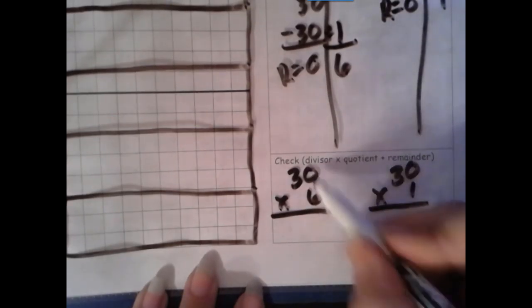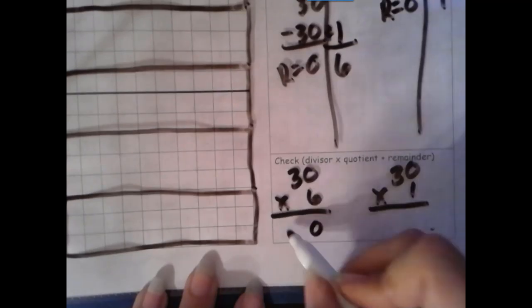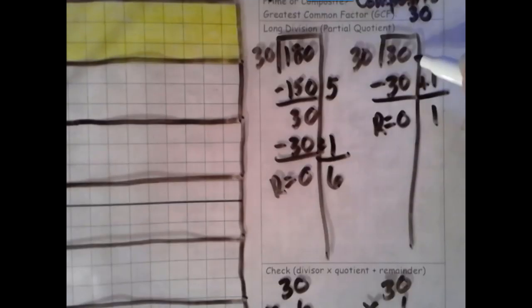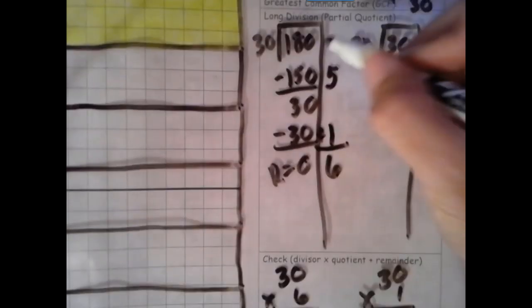So here, 6 times 0 is 0, 6 times 3 is 18. Here, we end up with the identity property of multiplication. 1 times 0 is 0, 1 times 3 is 3. When you multiply by 1, it stays the same. Let's check. Does it match our dividend? 30 matches 30. 180 matches 180. So both of those check.